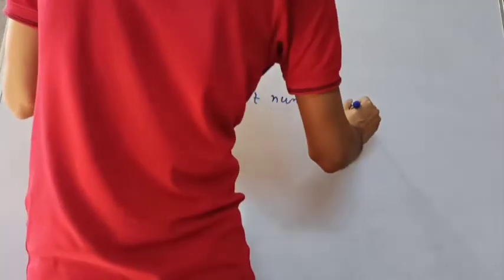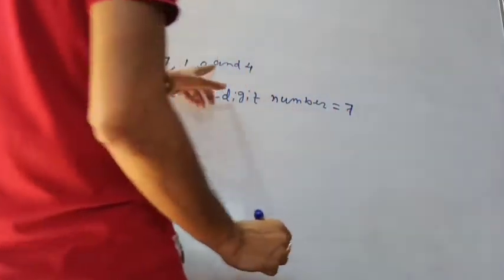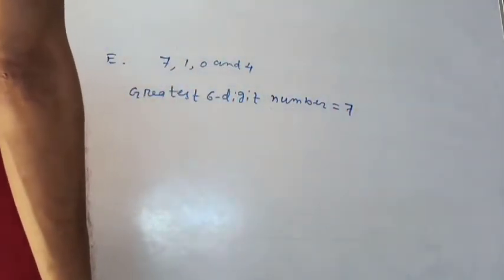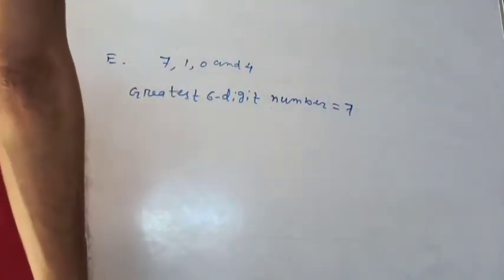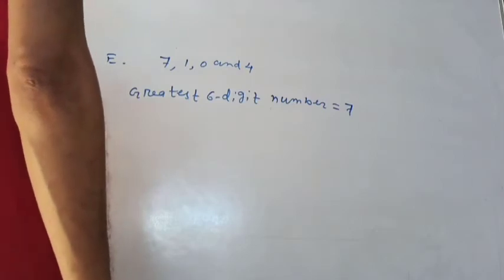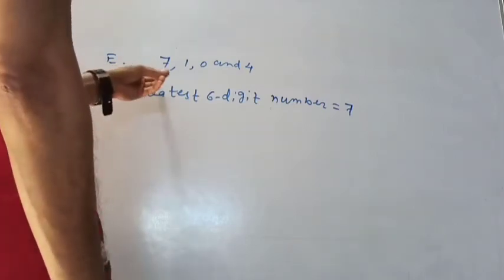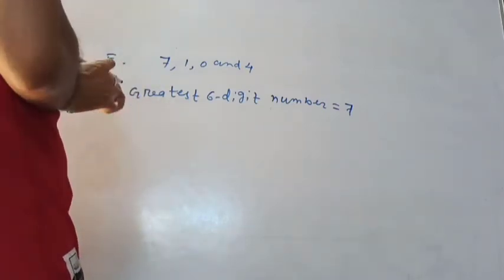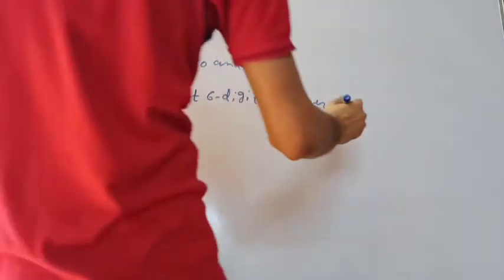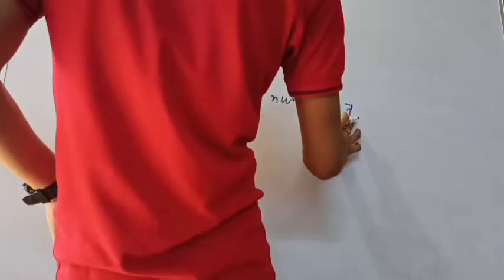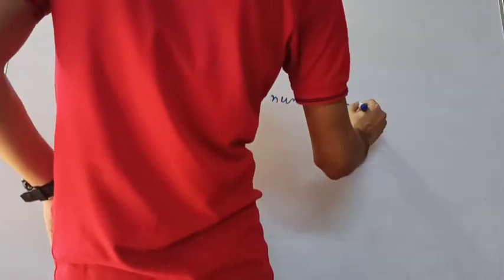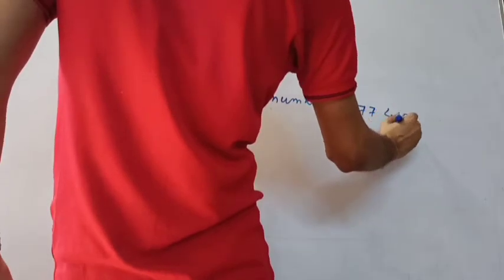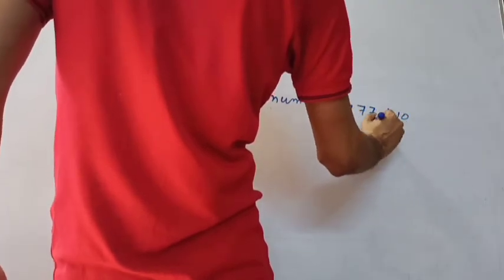So for the greatest 6-digit number, write 7 first, repeat it — 7, 7, 7 — then 4, 1, 0. This gives us 777,410 as the greatest 6-digit number using digits 7, 1, 0, 4 with repetition allowed.